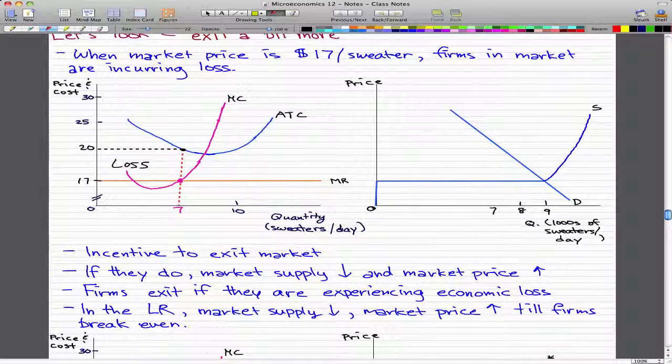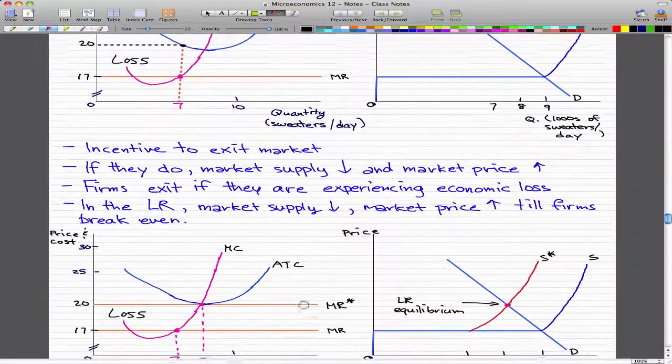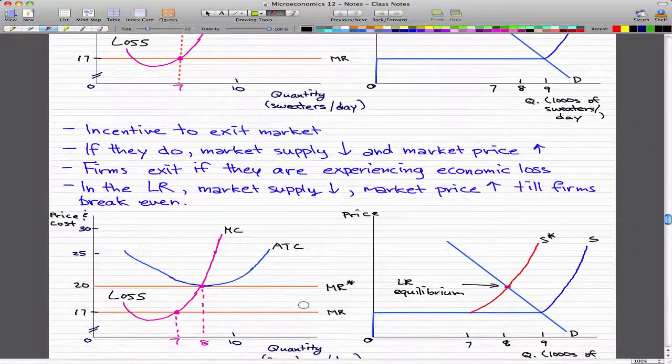Now, firms will exit as long as firms are experiencing economic loss. So in the long run, the market supply decreases and the market price increases till the firms break even.